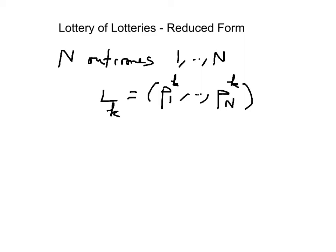What is a lottery of lotteries? It's a vector — a vector of probabilities assigned to each lottery. So for the compound lottery, we have a vector. For lottery 1 through k, we assign a vector of probability that each lottery happens: alpha 1 through k.